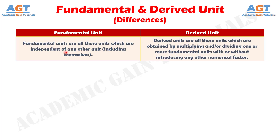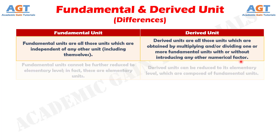Difference number 1: Fundamental units are all those units which are independent of any other unit, including themselves. Whereas, derived units are all those units which are obtained by multiplying and/or dividing one or more fundamental units, with or without introducing any other numerical factor.